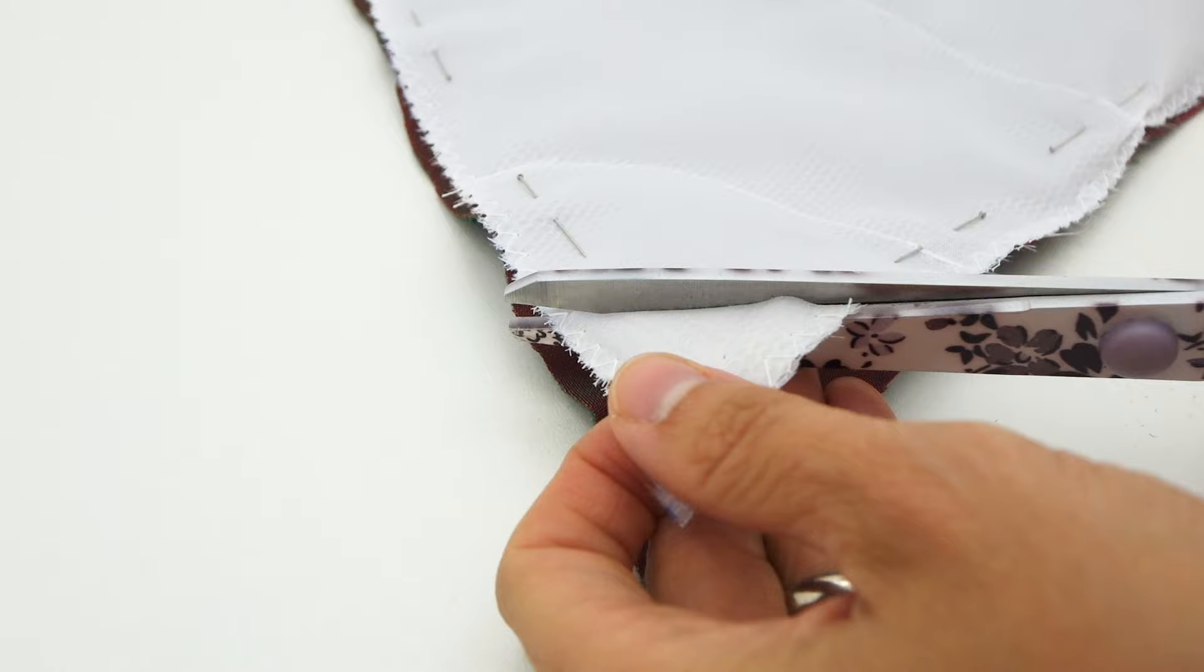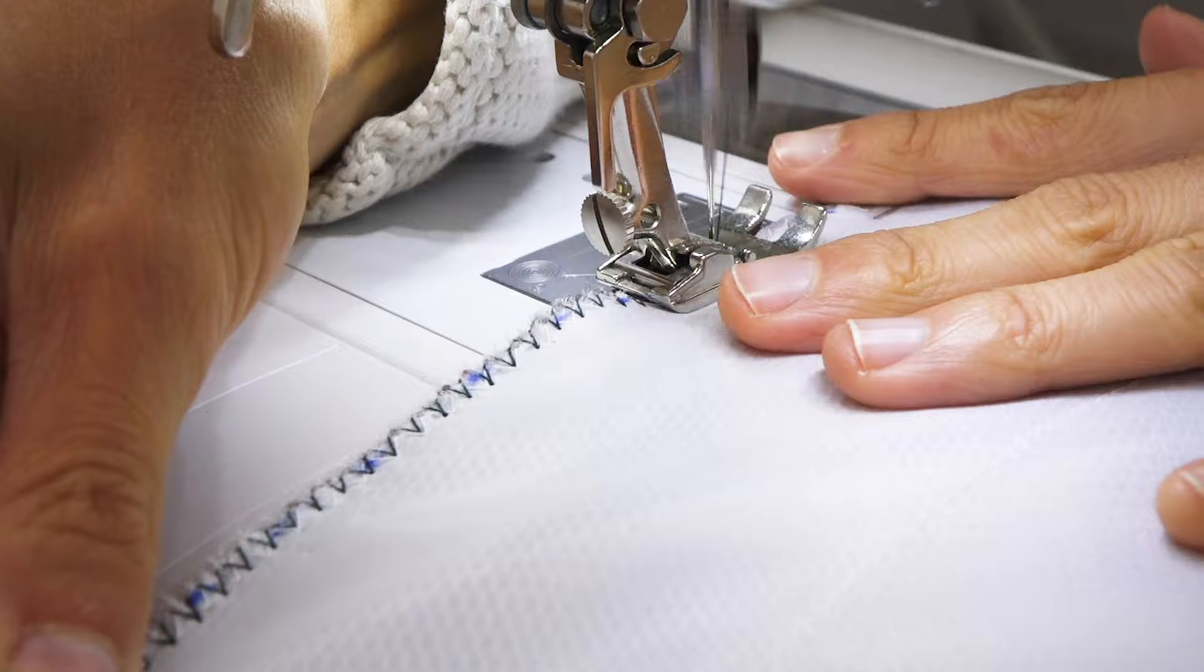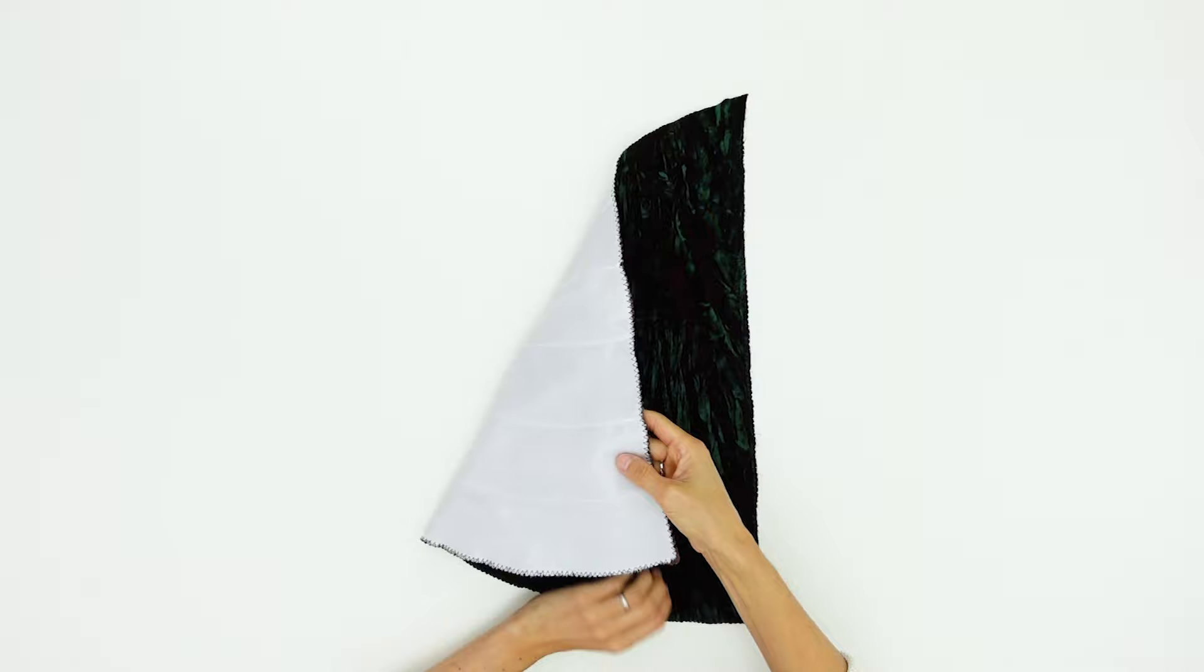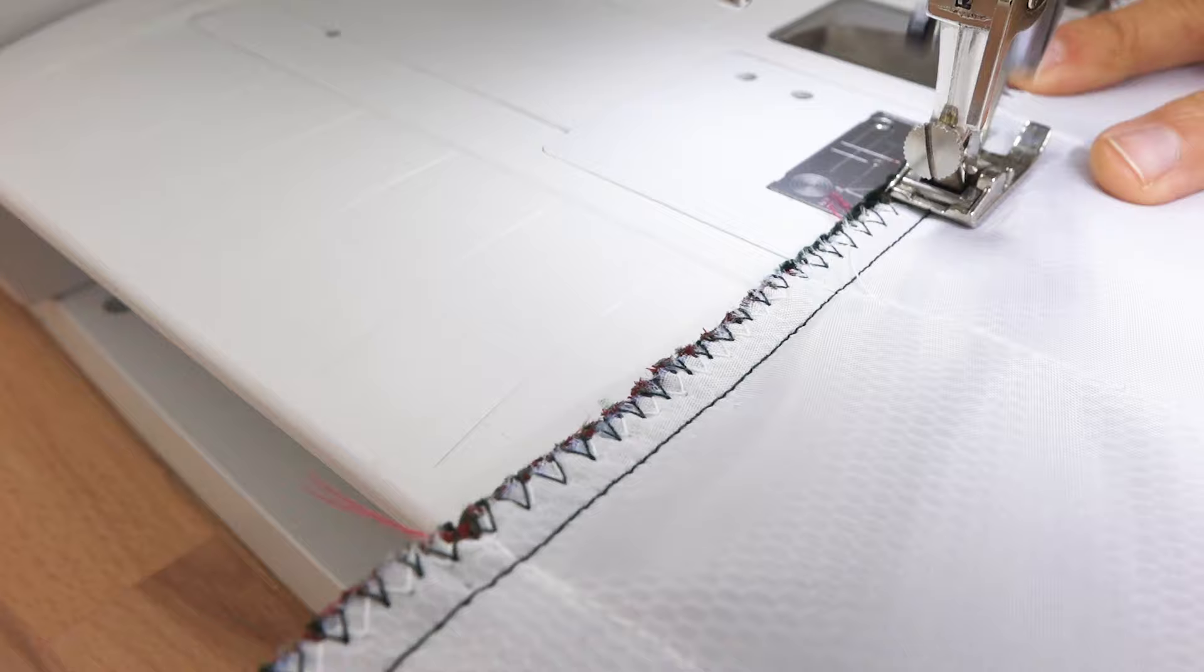I place it on the wrong side of one of my velvet triangles, I pin it, I remove the pointed tip that would be a bother to turn inside out later. And I make another zig-zag stitch all around to fix the layers together. Now fold your triangle right sides together and stitch it at 1cm from the edge.